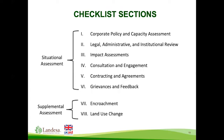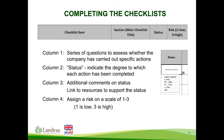The checklist is divided into sections to assess the company's risk. These sections include a corporate policy and capacity assessment, a legal, administrative, and institutional review, impact assessment, consultation and engagement, contracting and agreements, and grievances and feedback. A complete land-related due diligence process will include all of these sections. Supplemental checklists are also provided to address issues related to encroachment and land use change, should those be pertinent to a company's specific circumstances and operations.